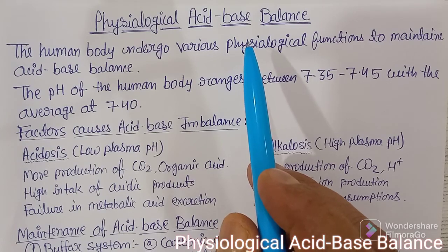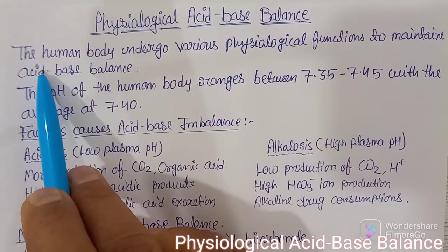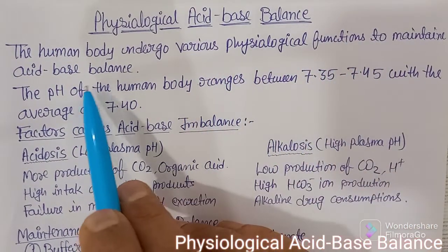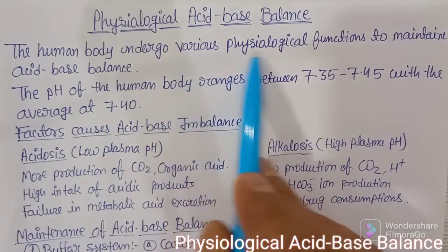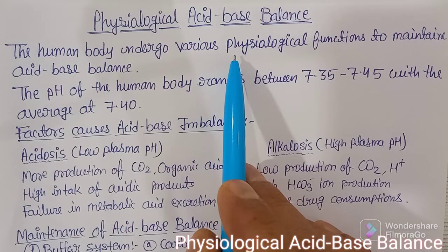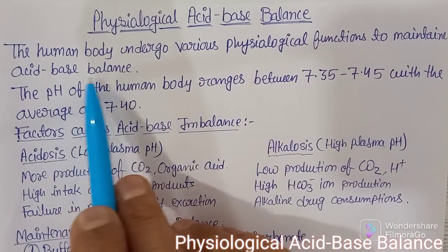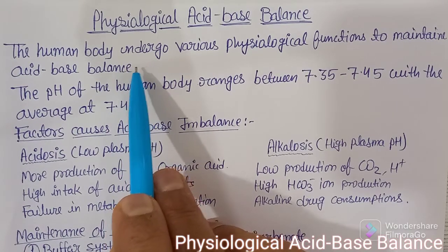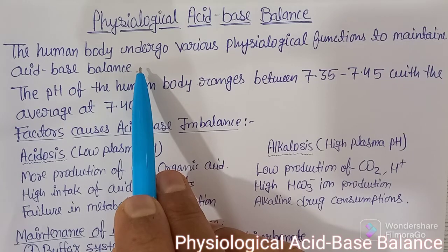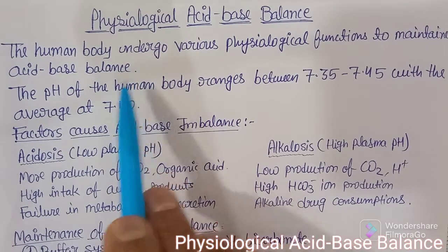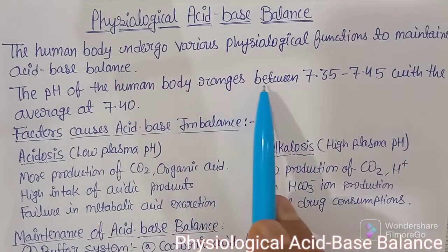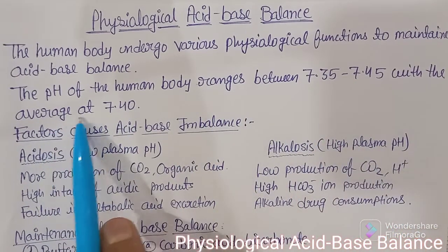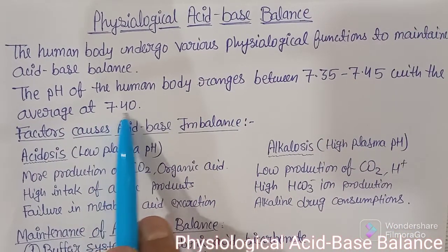There are different types of reactions that take place. The human body undergoes various physiological functions to maintain acid-base balance. Too much acidity is dangerous and too much alkalinity is also dangerous, so a neutral pH has to be maintained by the biological or body fluid. The pH of the human body ranges between 7.35 to 7.45, with an average pH of 7.40.